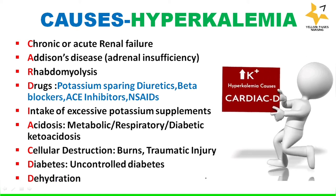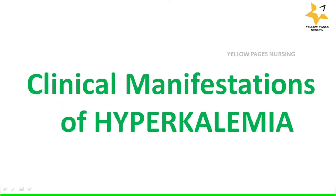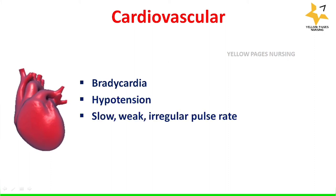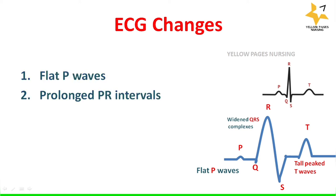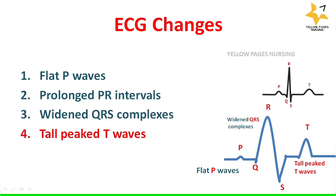Cardiovascular symptoms of hyperkalemia include bradycardia, hypotension, slow weak irregular pulse rate, and ventricular dysrhythmias. ECG changes include flat P waves, prolonged PR intervals, widened QRS complexes, and tall peaked T waves. Tall peaked T waves is the most important ECG change and an important point from an exam perspective.